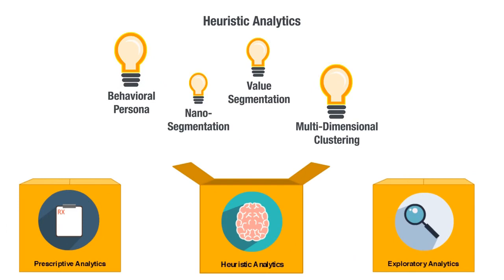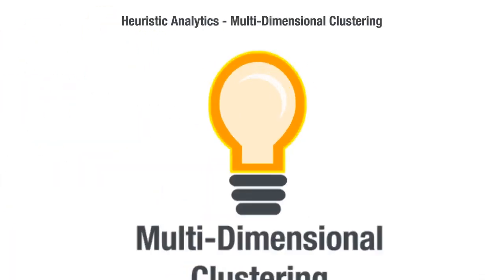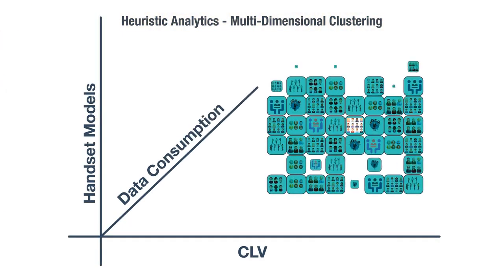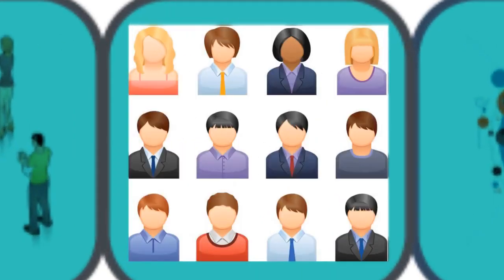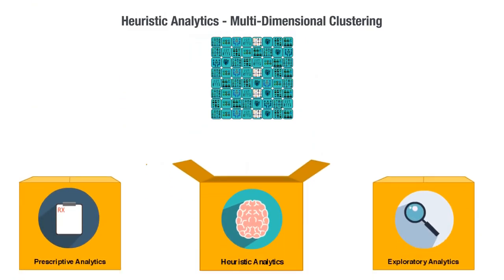Heuristic analytics models like multi-dimensional clustering to segment subscribers at a much granular level according to their natural affinity, instead of hypothetical consumption threshold-based segments.